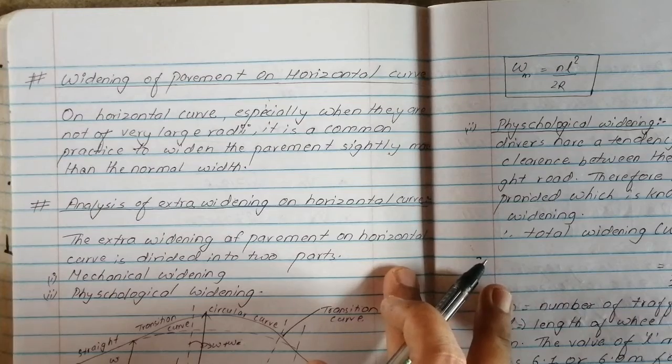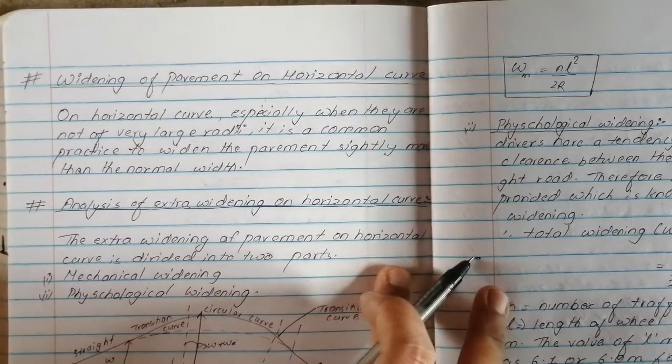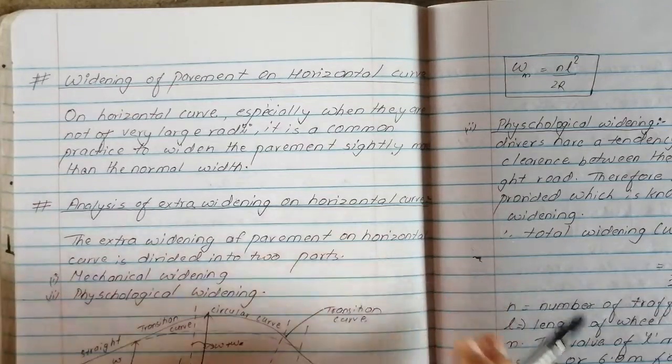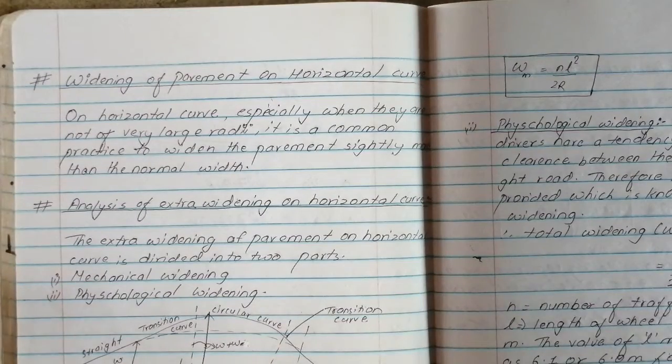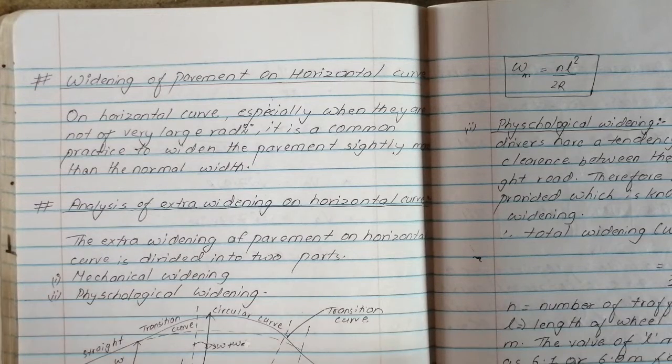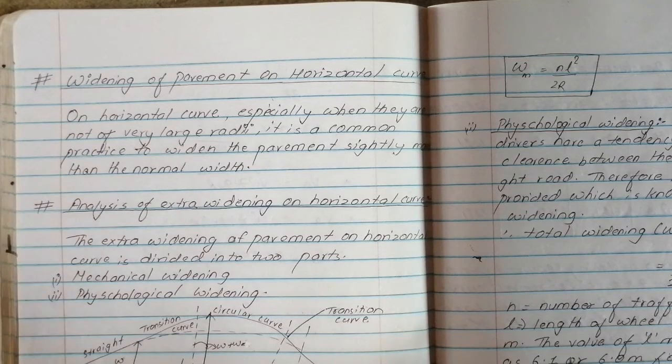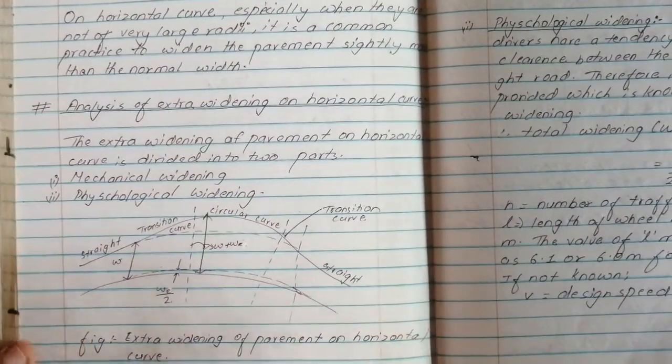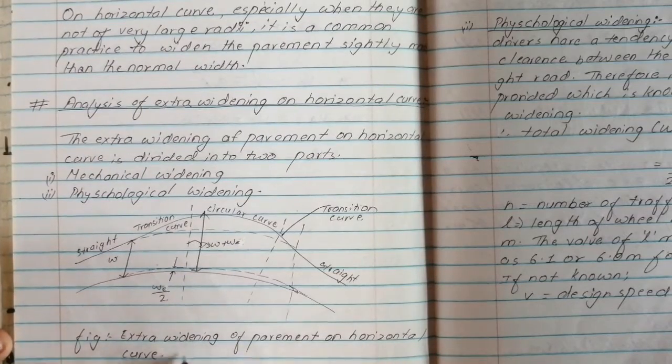It is a common practice to widen the pavement slightly more than the normal width. Analysis of extra widening on the horizontal curve. The extra widening of the pavement on the horizontal curve is divided into 2 parts: mechanical widening and psychological widening.